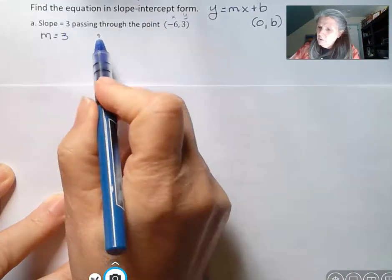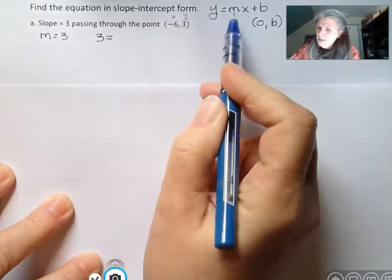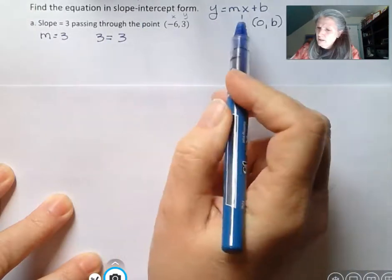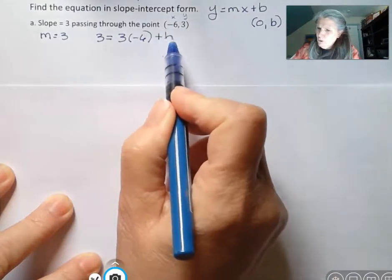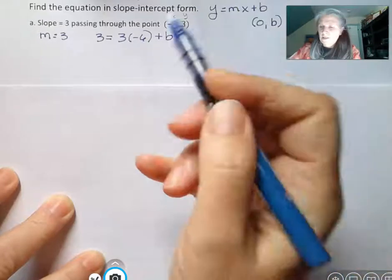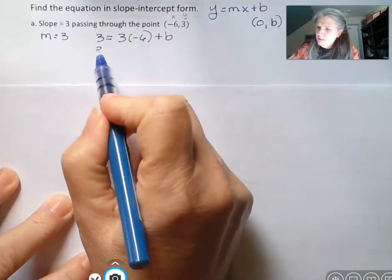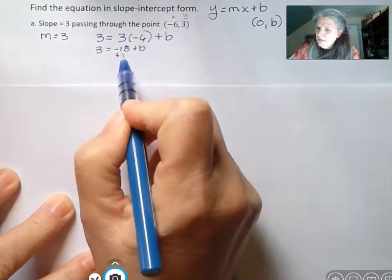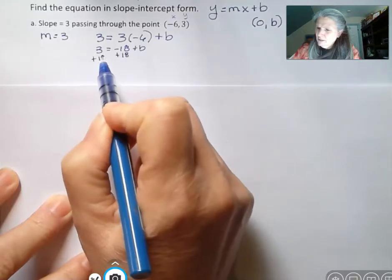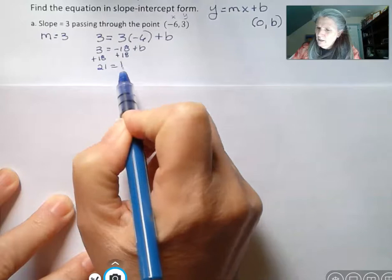So y is 3, and m is 3, and x is negative 6, and we don't know what b is, that's what we're trying to find. And so 3 times negative 6 is negative 18, and if I add 18 to both sides, I get 21 equals b.